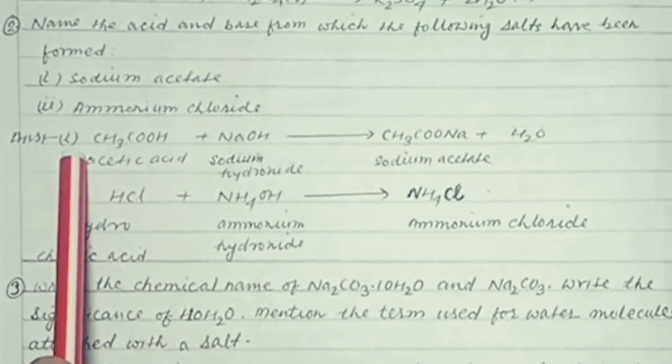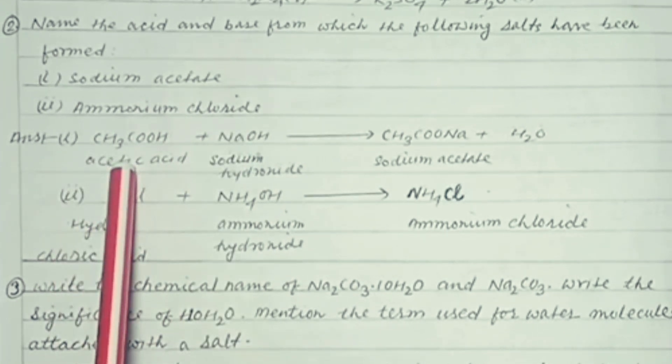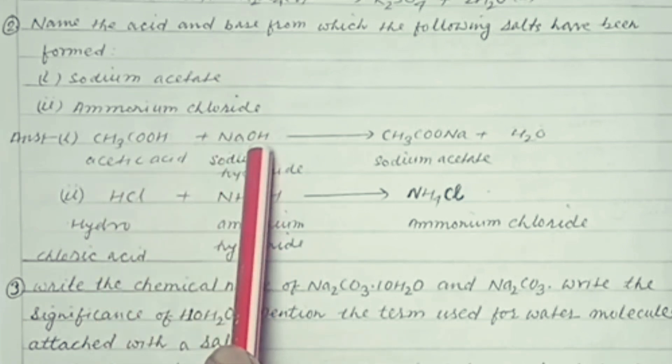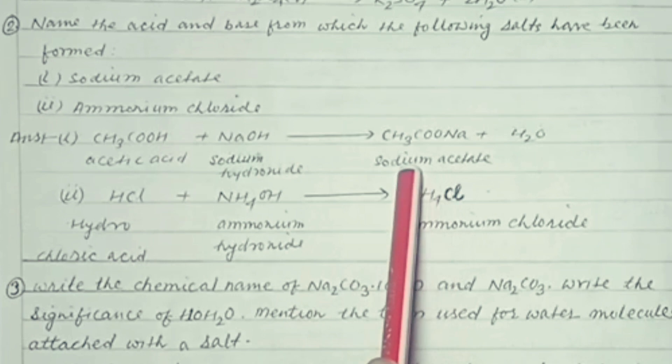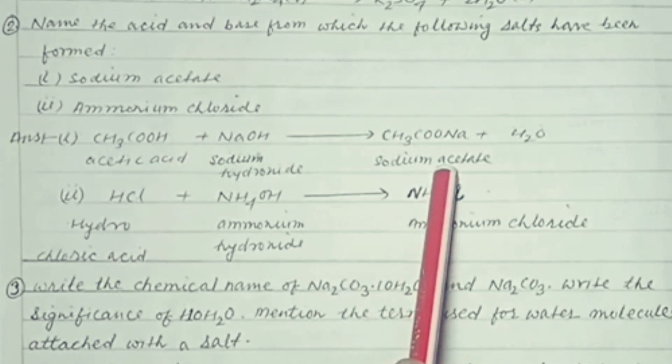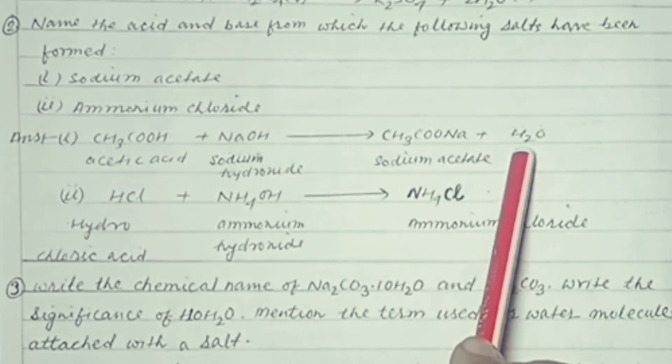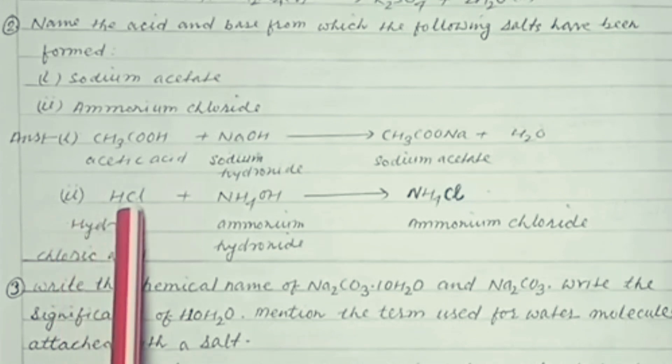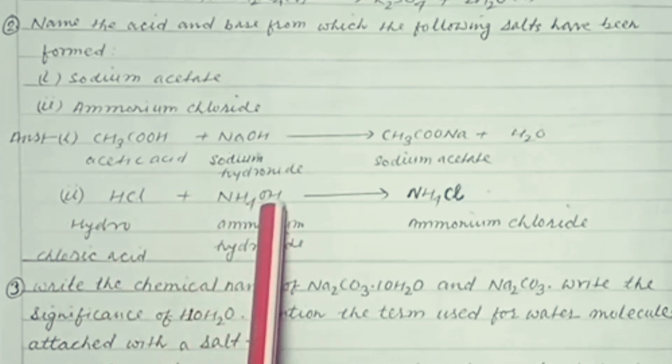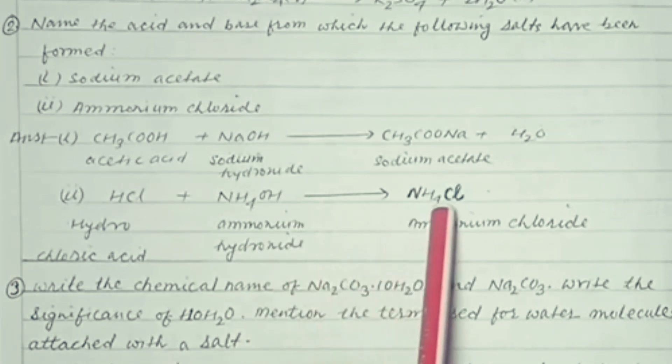Answer: 1. Acetic acid when reacts with sodium hydroxide, then we will get sodium acetate and water. Number 2. When HCL reacts with ammonium hydroxide, then we get ammonium chloride.